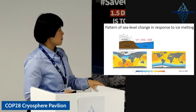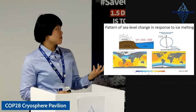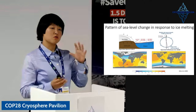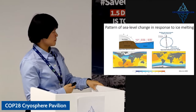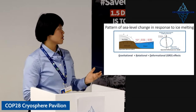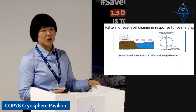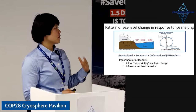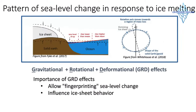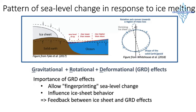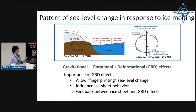That's what's happening in the gray regions in the bottom plots. At the same time, the retreating ice sheet in the polar region causes shifting in the rotation vector of the Earth, which imprints a quadrature pattern on the globe. All of these effects together are called GRD effects — gravitational, rotational, and deformational effects. The importance of GRD effects is that when we understand these processes, it allows us to fingerprint sea level change associated with ice melting. These GRD effects in turn also influence ice sheet behavior — so there's a feedback between ice sheets and GRD effects.